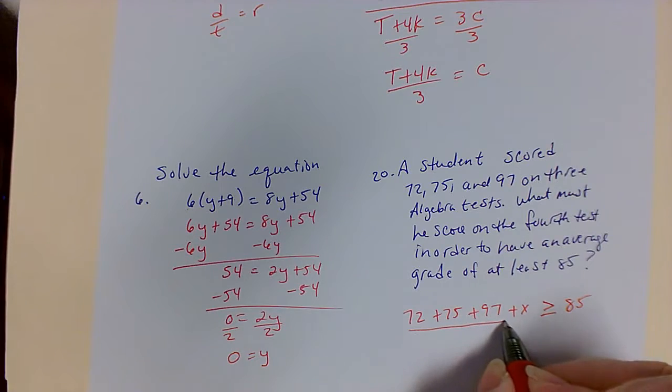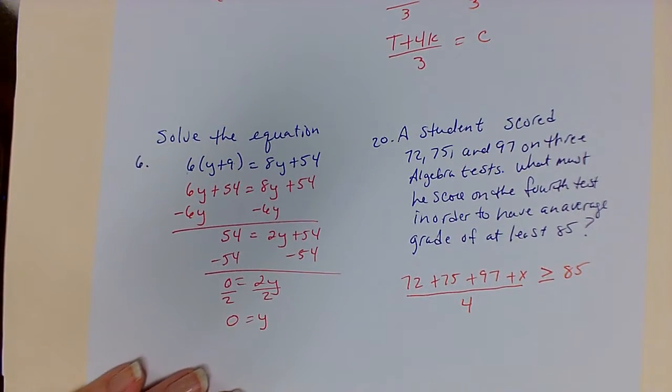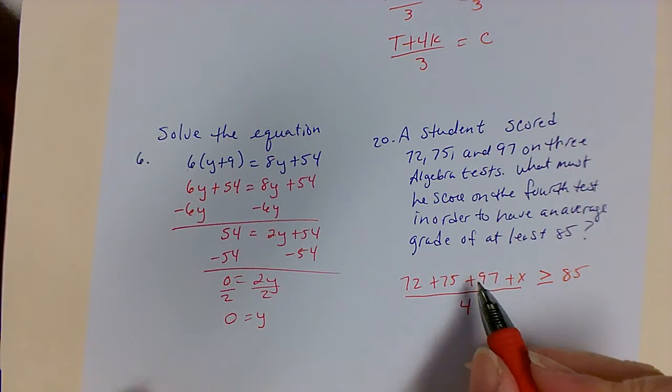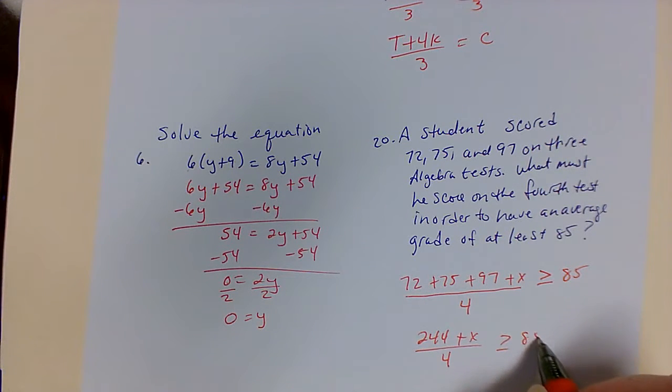Then I need to divide the 4 tests by 4 to get an average. I'll add my 3 test grades, which gives me 244 plus x over 4 is greater than or equal to 85.